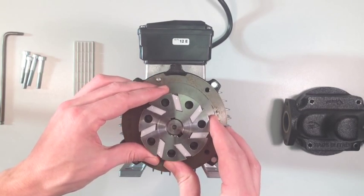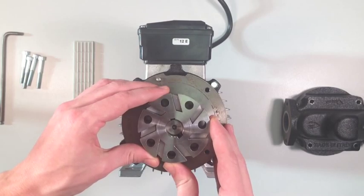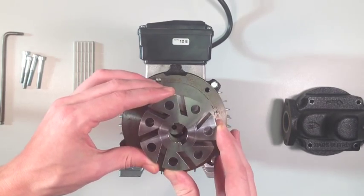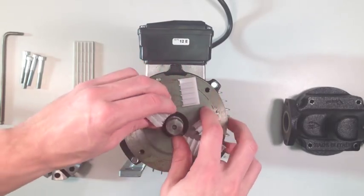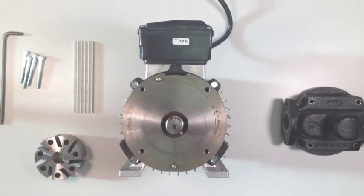To change the vanes, first remove the rotor from the shaft of the pump. The rotor should slide out of position. When the rotor is off the shaft of the pump, remove the old vanes.